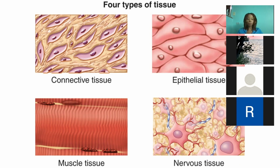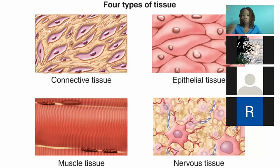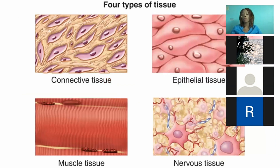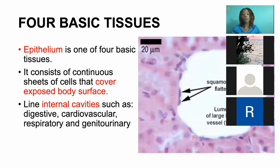Not necessarily at the cellular level, but we've spoken about different tissues in human physiology. You need to know that there are four basic types of tissue — I'll definitely ask you that. The four basic types are connective tissue, epithelial tissue, muscle tissue, and nervous tissue. You'll know all the details about these tissues eventually.